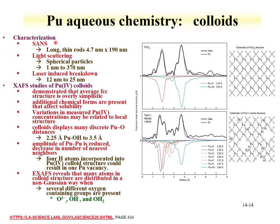Characterization of colloids can be done with small-angle neutron scattering, light scattering, and laser-induced breakdown spectroscopy. Each tends to produce different results for particle sizes. This is due to both the methods themselves — for instance, light scattering assumes spherical particles — and the fact that the solutions differ. The time between when the solution was made and when the measurement was taken will vary, so results can differ.